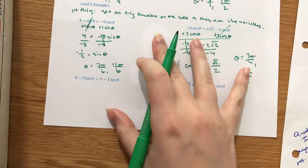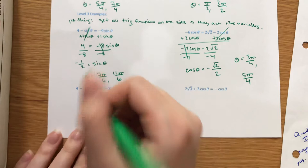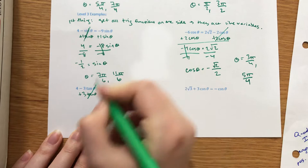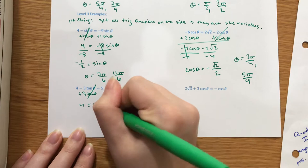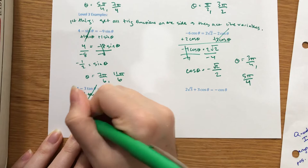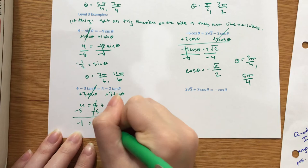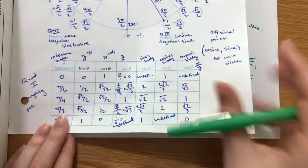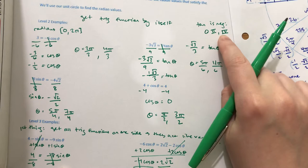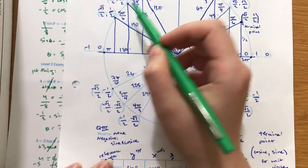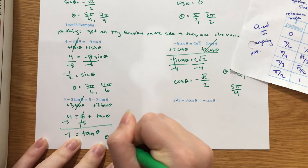Tangent example. Add 3 tangent to both sides — this cancels. So we have 4 equals 5 plus tangent theta, since negative 2 plus 3 is 1. Subtract 5 from both sides: negative 1 equals tangent theta. When is tangent 1? That's at pi over 4. But specifically we need when tangent is negative 1 — tangent is negative in quadrants 2 and 4. So we need the pi over 4 values from quadrants 2 and 4: 3 pi over 4 and 7 pi over 4. Theta equals 3 pi over 4 and 7 pi over 4.